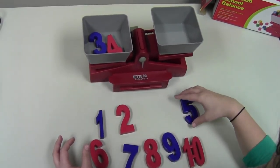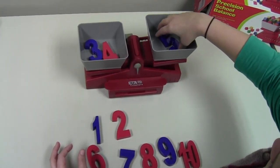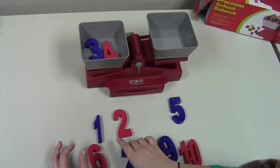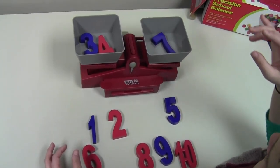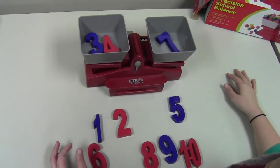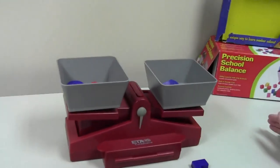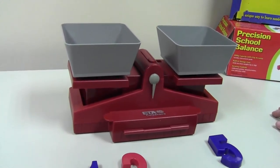And then they might go down to like 5. See, 5 doesn't work, and then maybe try 7. And then we can see that 3 plus 4 balances out to 7.